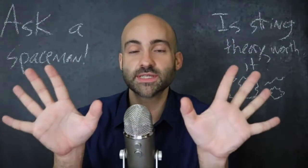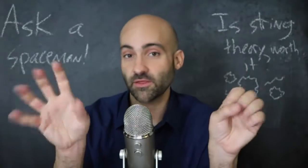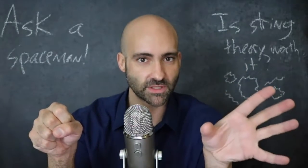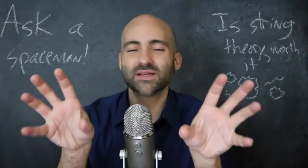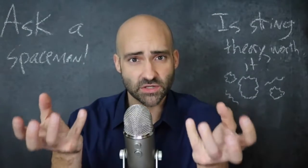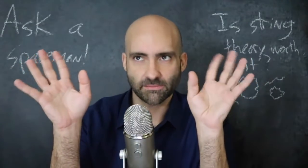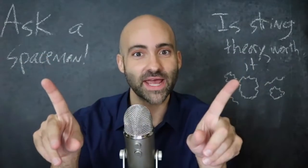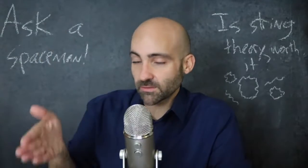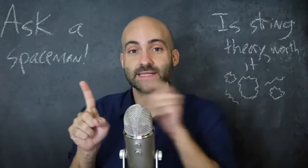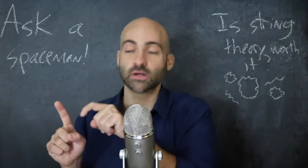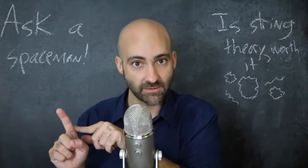Supersymmetry is a proposed symmetry in nature between the fermions, which are the building blocks, and the bosons, which are the forces in nature. And it says that they're really connected, that they're really related to each other in a very cool and complicated mathematical way. Supersymmetry says that for every fermion, there is a partner over in the boson family, and for every boson, there is a partner over in the fermion family.